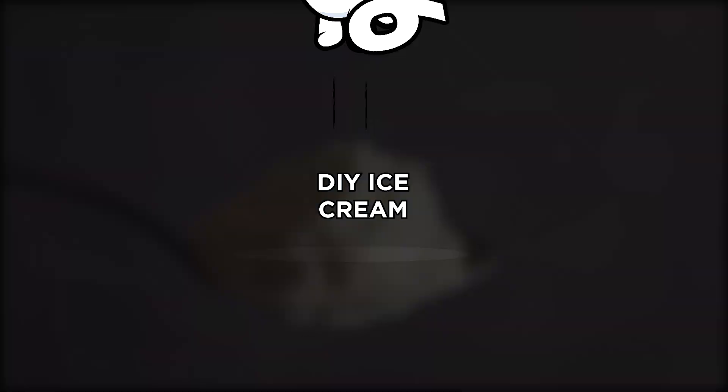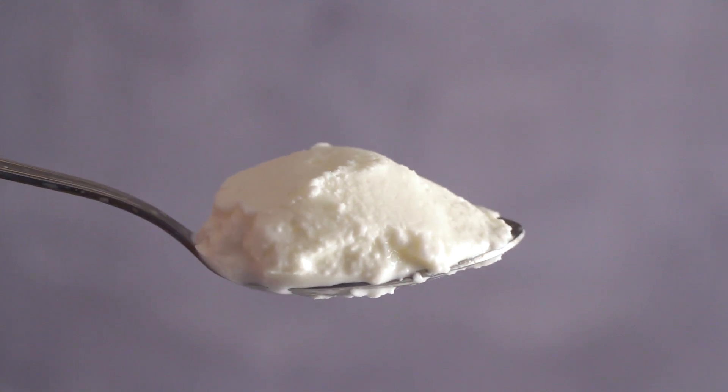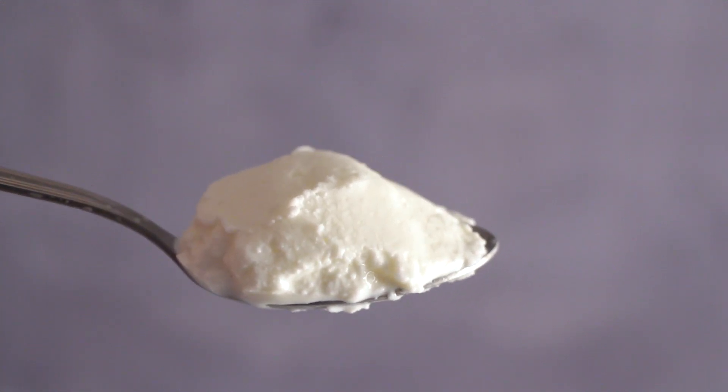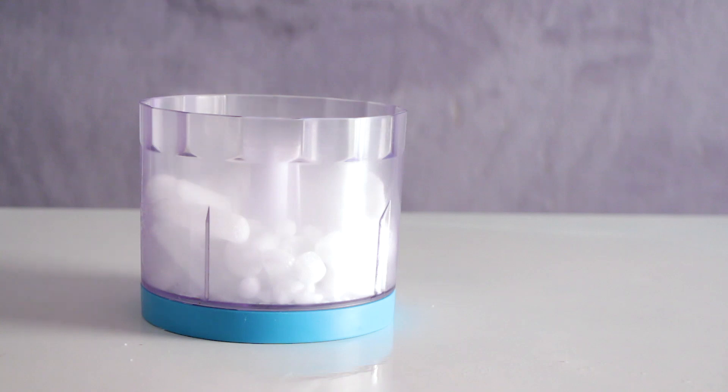Number 6, DIY Ice Cream. Ever wanted to make your own ice cream in a flash? It's easier and tastier than you may think. With the help of dry ice, place some crushed dry ice into a blender and blend it until it reaches the consistency of powdery snow.